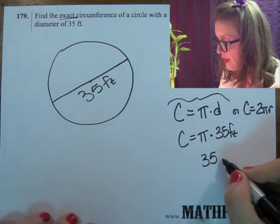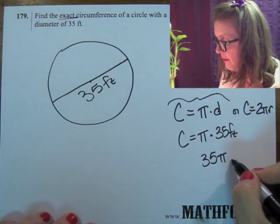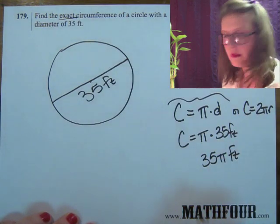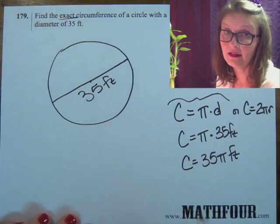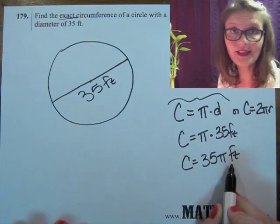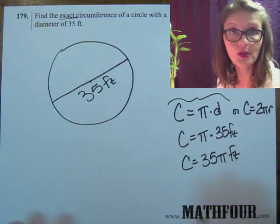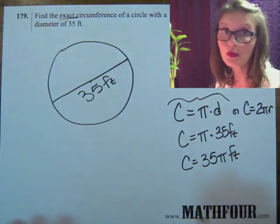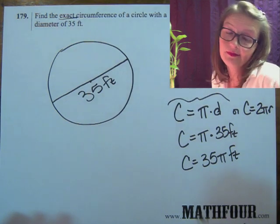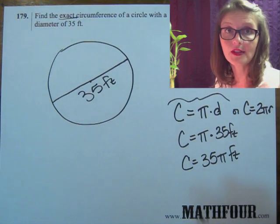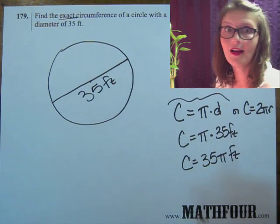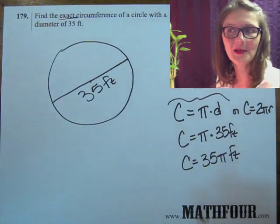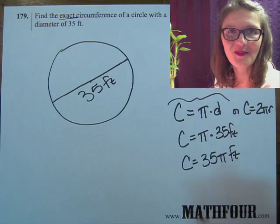We like to write the 35 first, 35 pi, and then feet. And that's the circumference exactly. So again, it doesn't feel good. It makes no sense because you can't actually truly measure with that. But that's the exact circumference. This is Bon Crowder with Math4.com, fighting the flies, and reminding you that math is not a four-letter word.